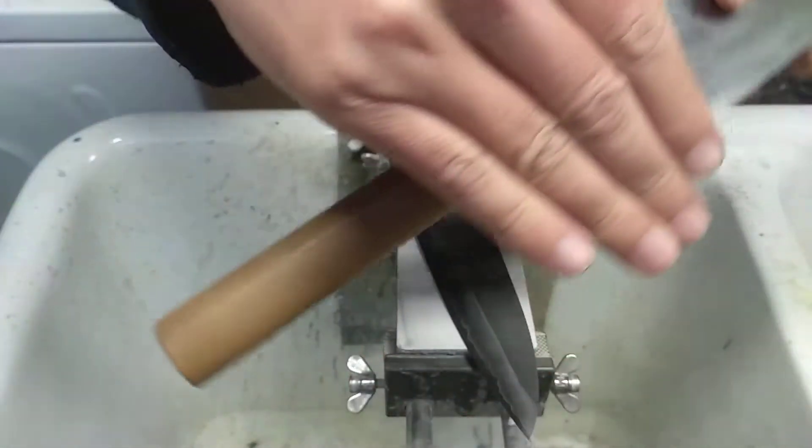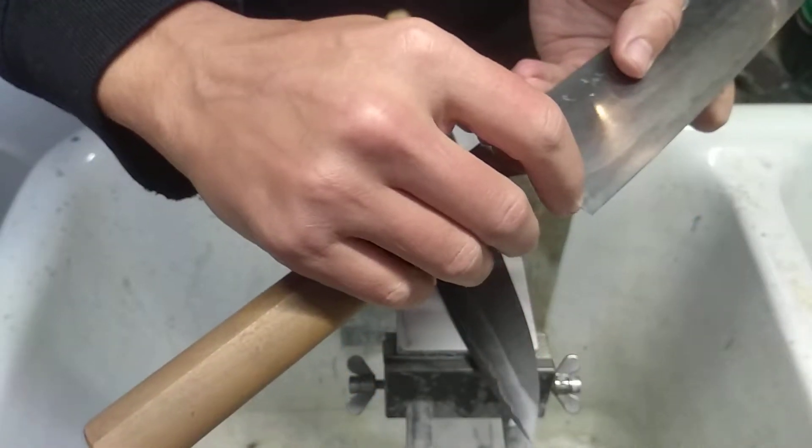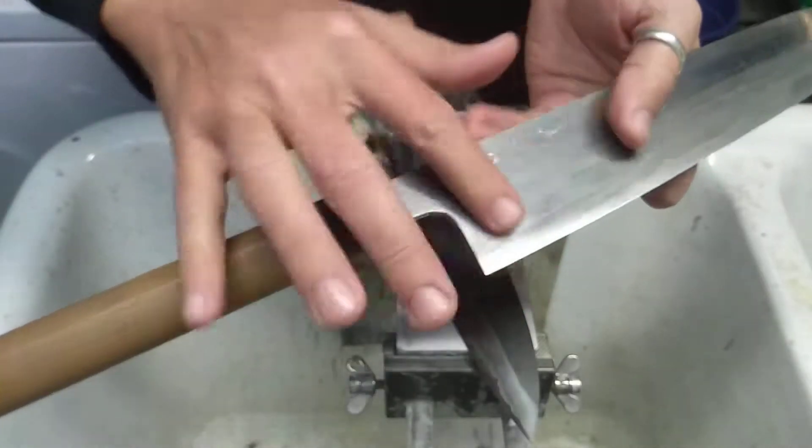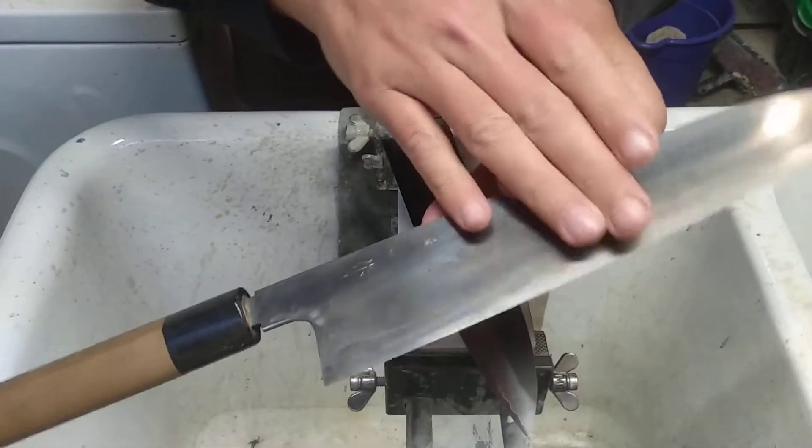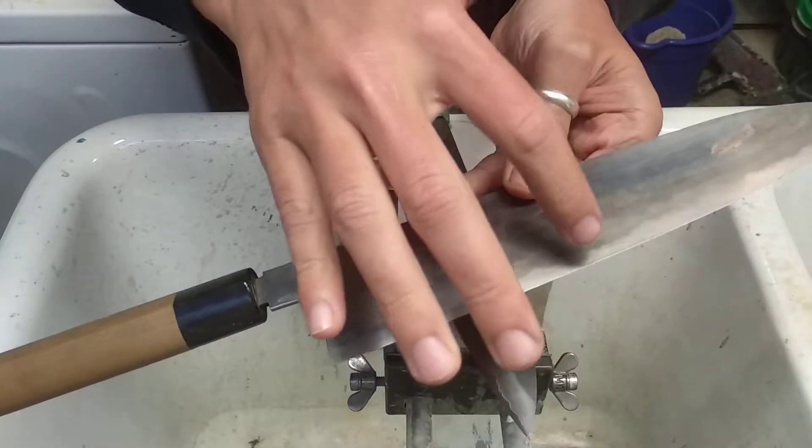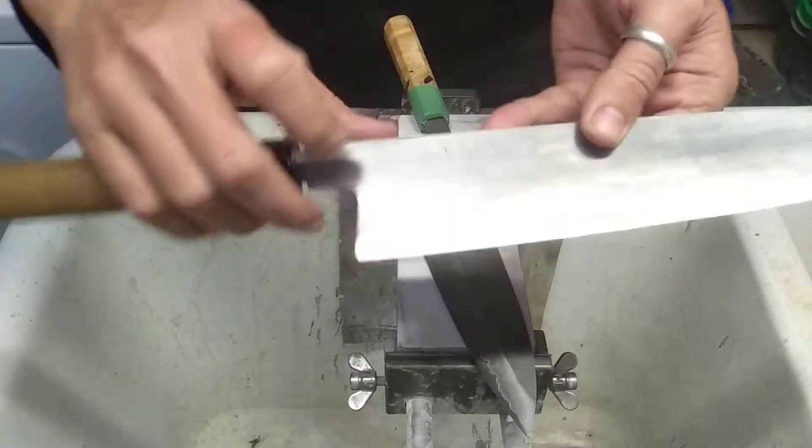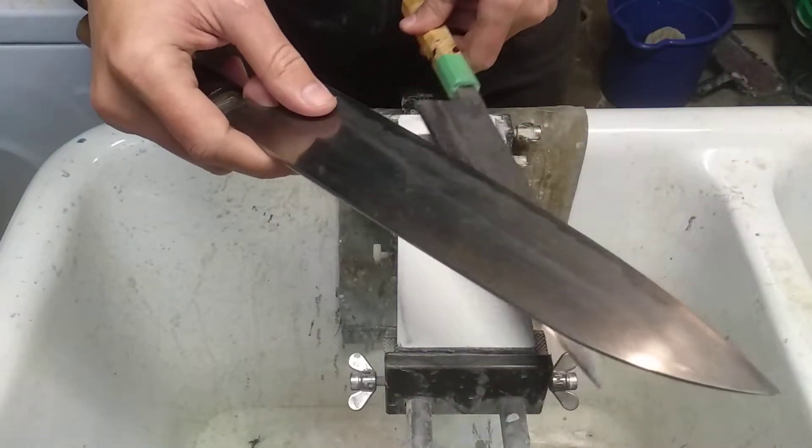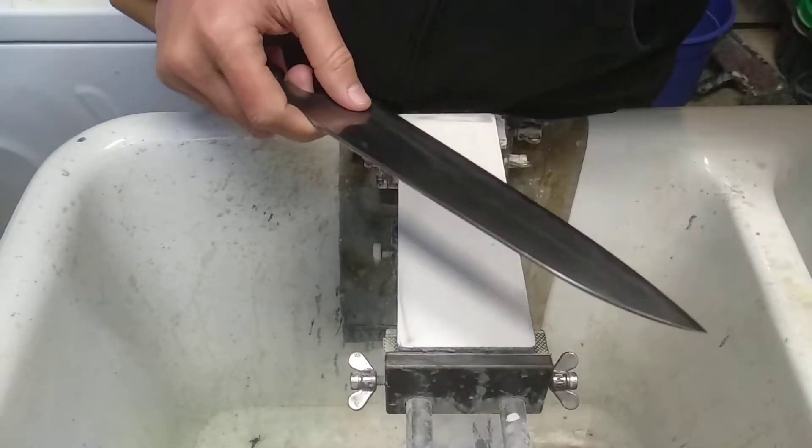And then another plane that's a little shallower, that goes from about there to a bit higher, and then it's just the hira of the blade. Now those two planes, the shallow one and the steeper one near the edge, are blended together by a soft stone, probably around a 500 grit.